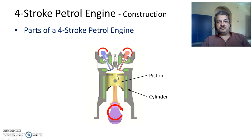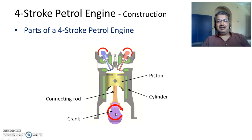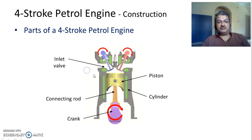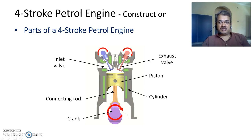This reciprocating motion of the piston needs to be converted into rotary motion. In order to run an automobile we need rotary motion because the wheel has to rotate. This reciprocating motion of the piston is converted to rotary motion by use of a connecting rod and a crankshaft. In order to control what gets into and goes out of the cylinder, we have two valves: the inlet valve, which controls the input to the cylinder, and the exhaust valve, which controls the gases going out.